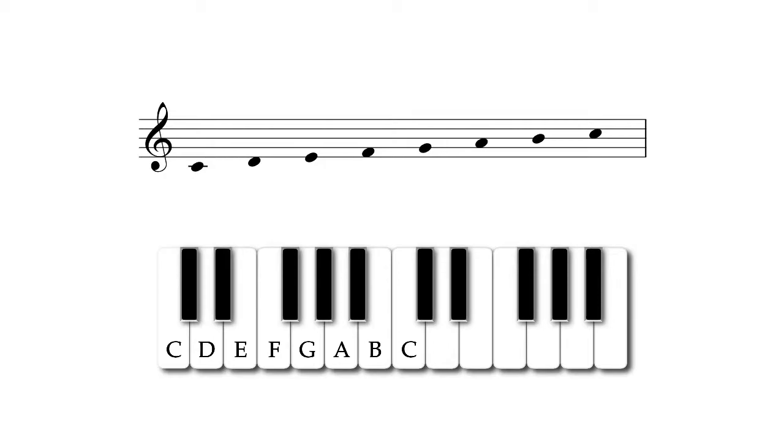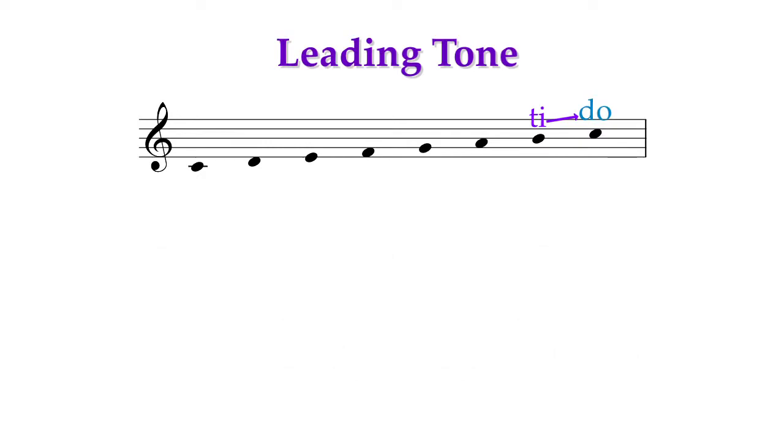The most important note in a major scale is the seventh note of the scale, Ti. The reason that this note is so important is that it creates a very strong tendency to want to hear the note Do next. Ti leads to Do, so the note Ti is called the leading tone. Since this note creates the tendency to want to hear another note follow it, it is also called a tendency tone. We will learn several tendency tones, but the most important is the leading tone, Ti.